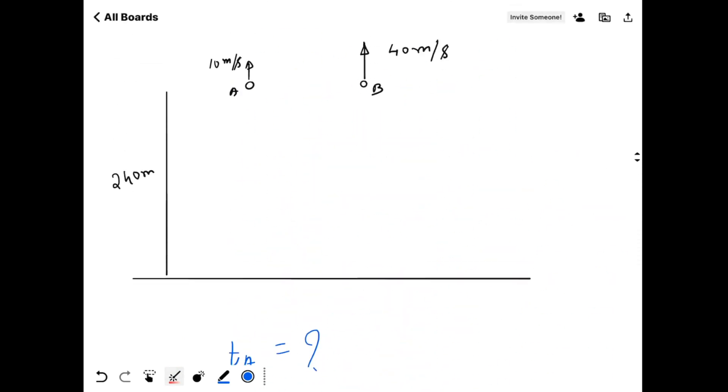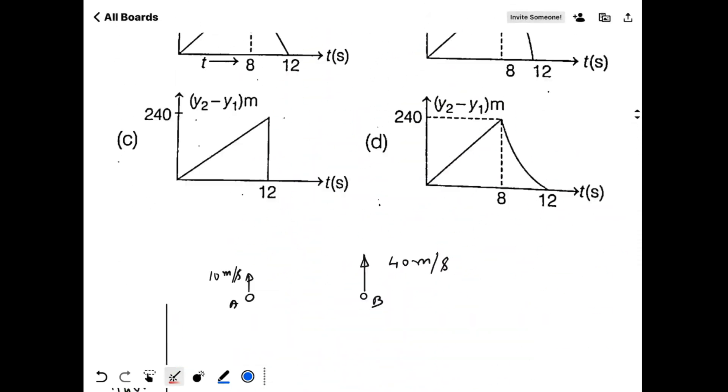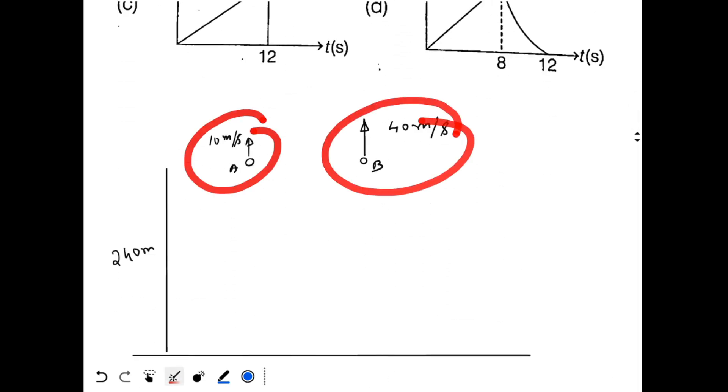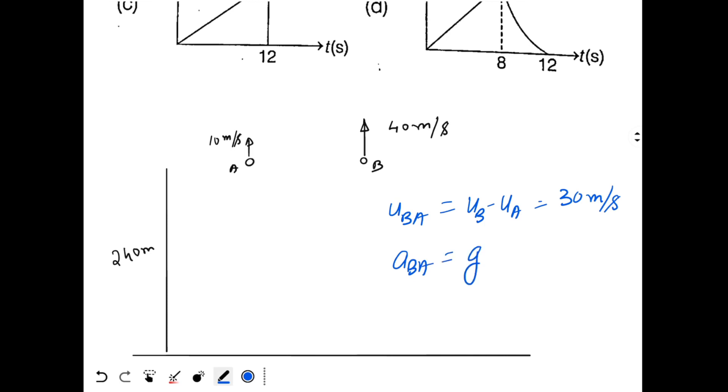And now we go into relative motion. Since we have to draw the graph for B with respect to A, I will see B with respect to A. U of B with respect to A will be UB minus UA, that is 40 minus 10, so that is 30 meter per second. Now acceleration of B with respect to A will be what? B has acceleration g vector, A has acceleration g vector. So g vector minus g vector is 0, so there is no relative acceleration. Relative speed is constant.